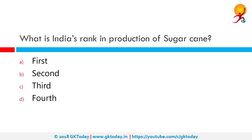What is India's rank in production of sugarcane? We are currently the second largest sugarcane producers in the world after Brazil. In fact, we are projecting a 10% jump between October 2018 and September 2019, and we are set to produce 35.5 million tons of sugar. This means we will unseat Brazil very soon.